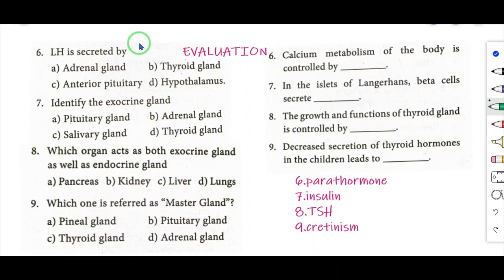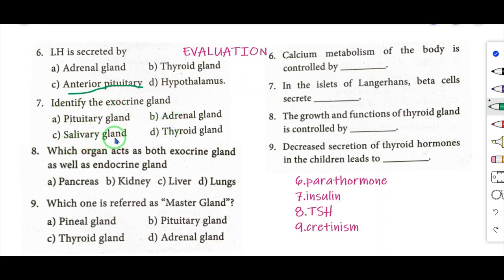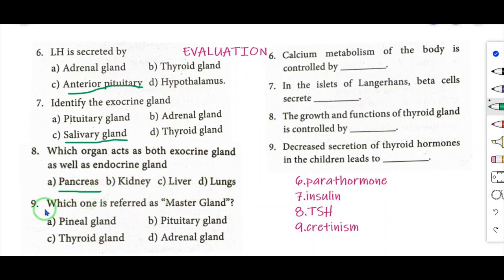Textbook evaluation. Question 6: LH is secreted by — correct answer: anterior pituitary. Question 7: Identify the exocrine gland — answer: salivary gland. Question 8: Which organ acts as both exocrine and endocrine gland — answer: pancreas. Question 9: Which one is referred to as master gland — answer: pituitary gland.